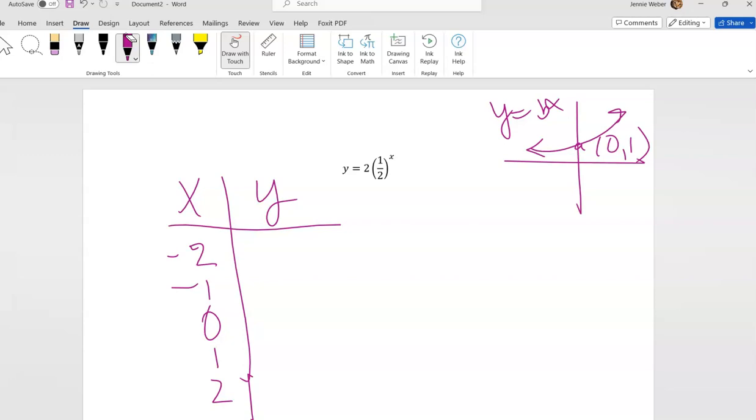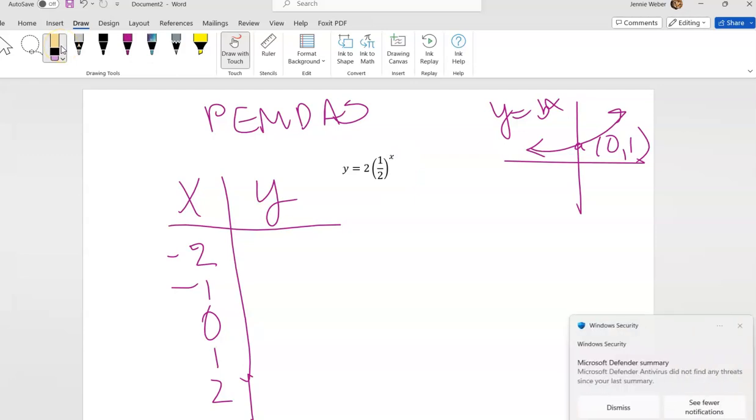Now as you look at this, you are first going to be tempted to go two times one half is one. We can't do that. This has an exponent on it. This has to be done first. Remember order of operations: Please Excuse My Dear Aunt Sally. And those exponents come first before we do any multiplication and division. So it is important that you do that part first.